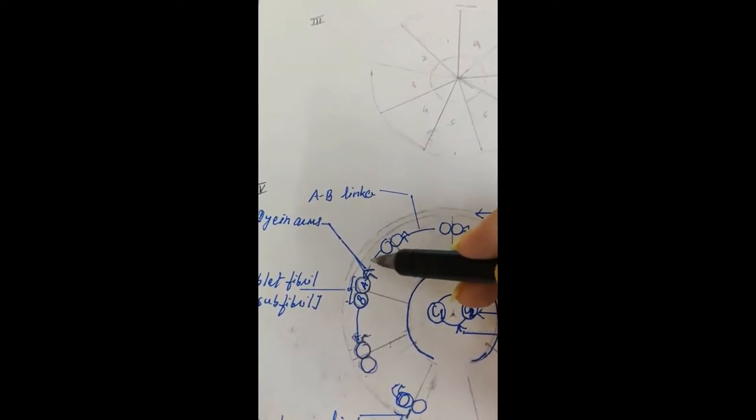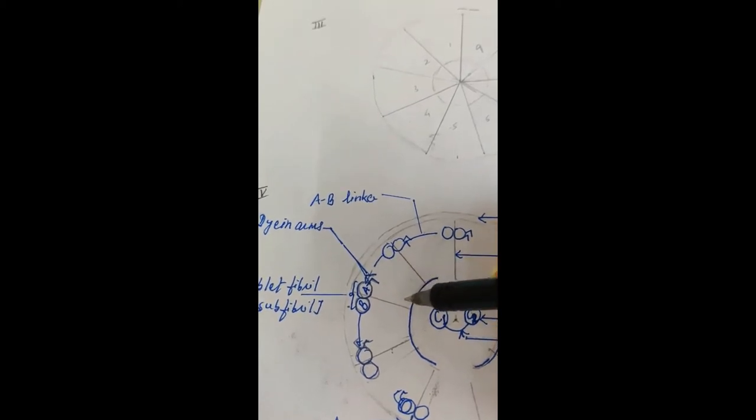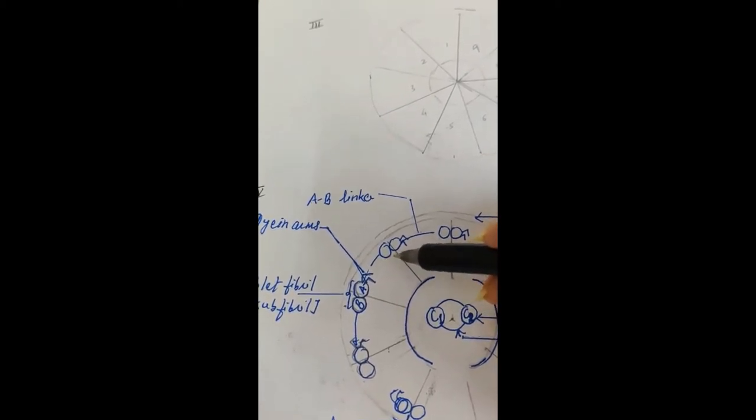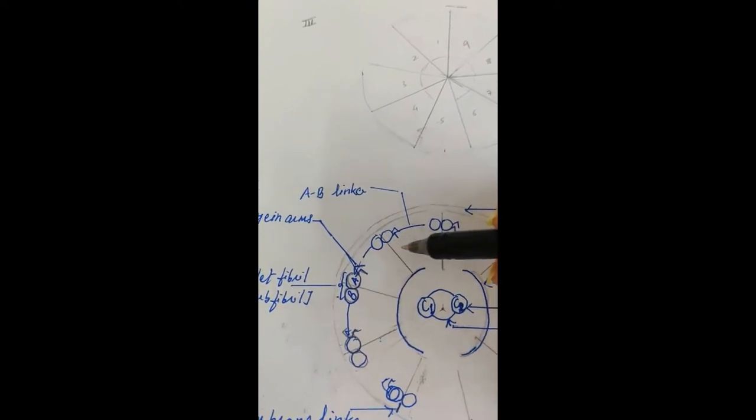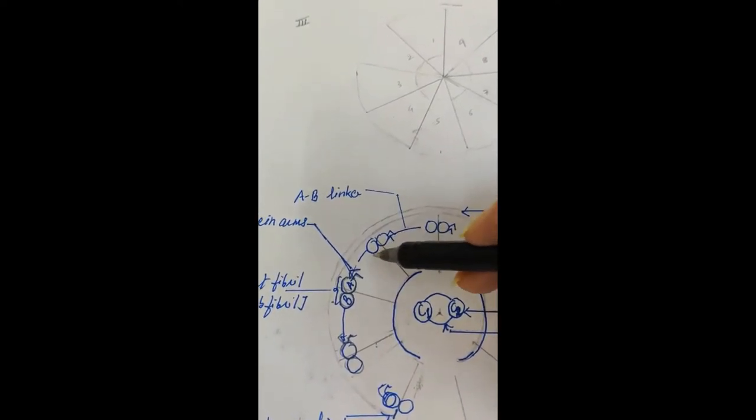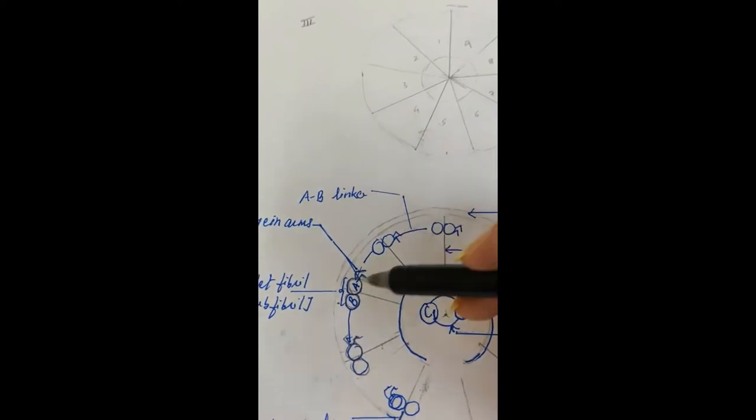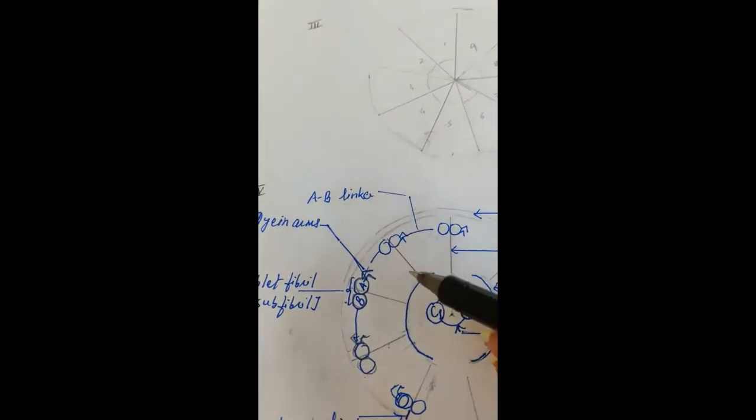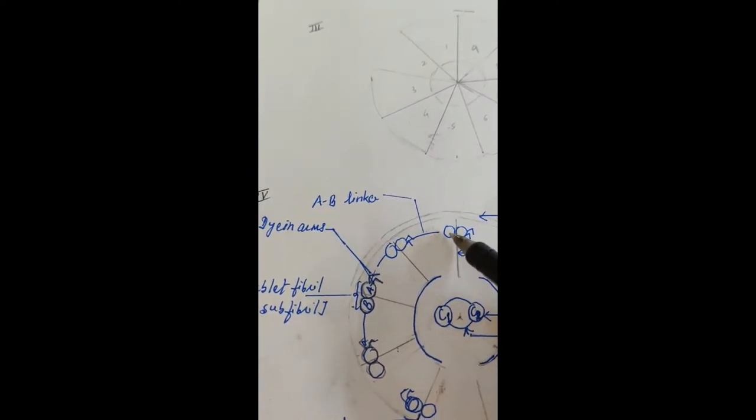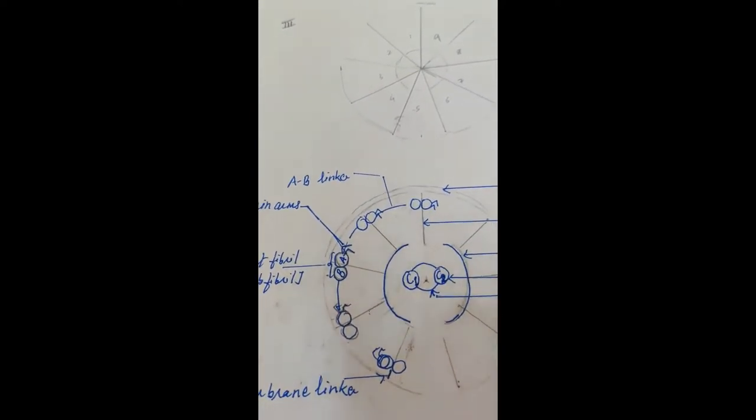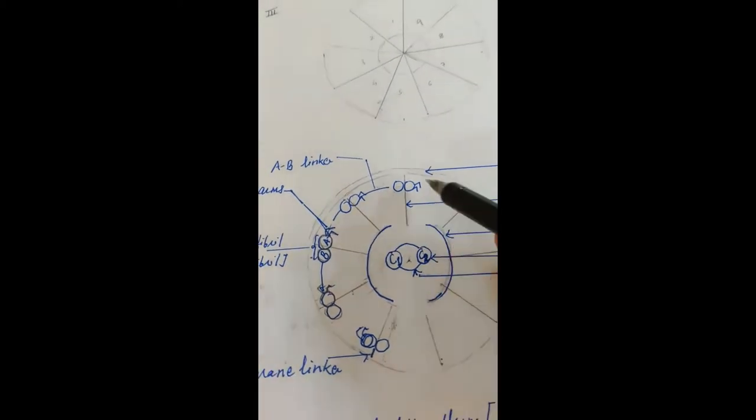As well as with rest of the tubules to move the flagellum or cilium. So these dynein arms, one outer one inner, and make the linkers too. This is the A, this is the B of the other. So A-B linkers. Remember all of them are made up of proteins.